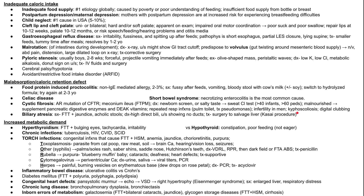Another cause of malabsorption is biliary atresia. Symptoms include failure to thrive, jaundice, and acholic (light-colored) stools. Diagnosis is with high direct bilirubin, and ultrasound can show no ducts coming from the biliary system. Treatment is surgery — specifically the Kasai procedure — to try to salvage the liver.